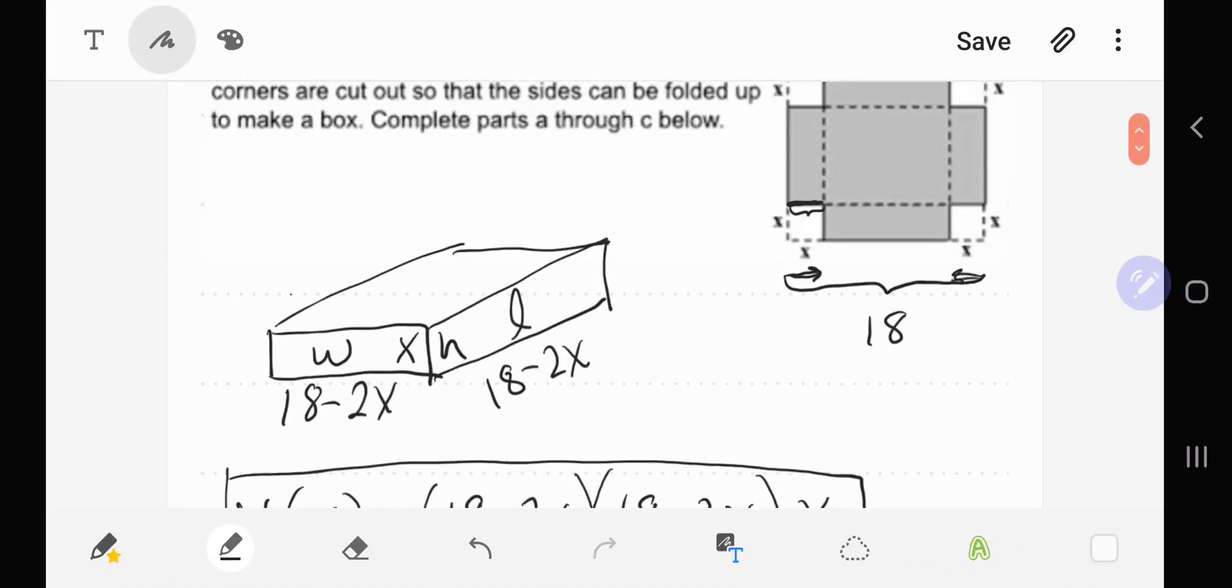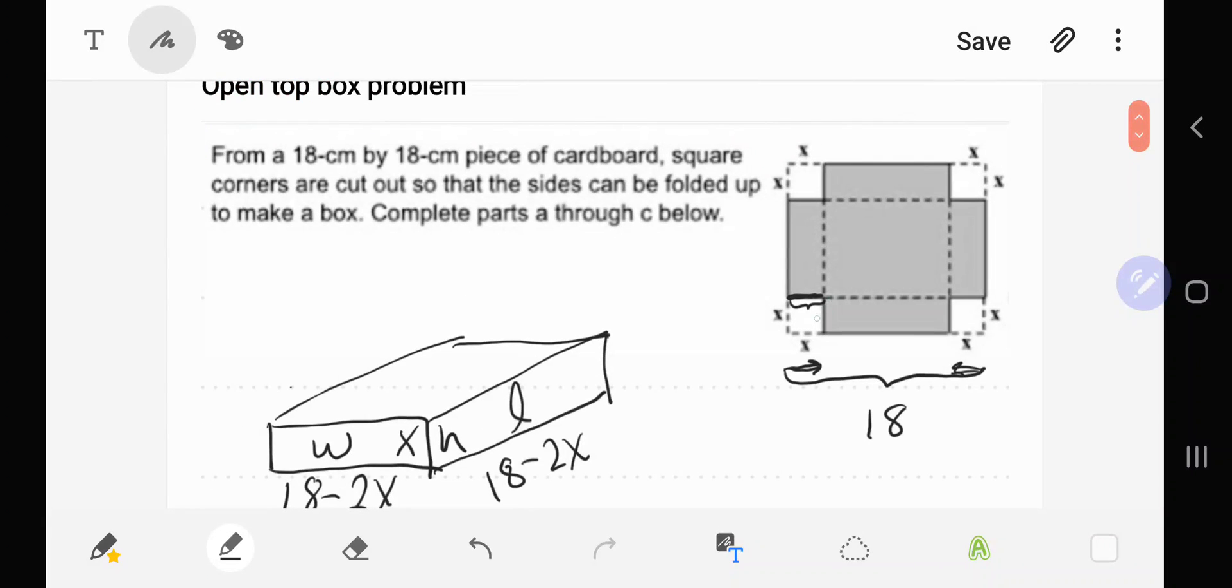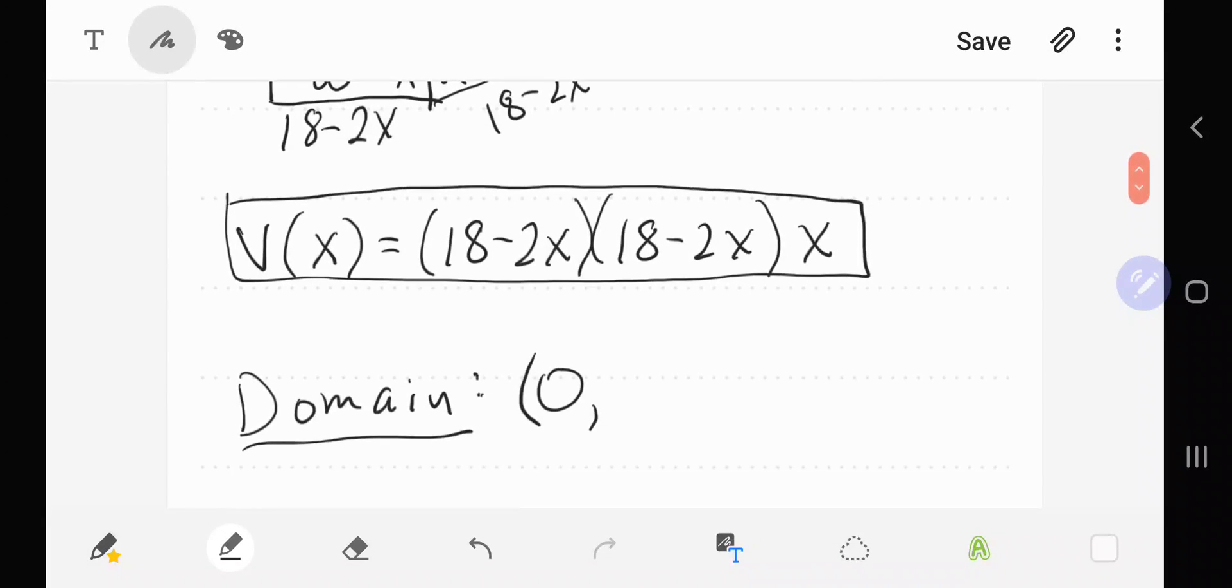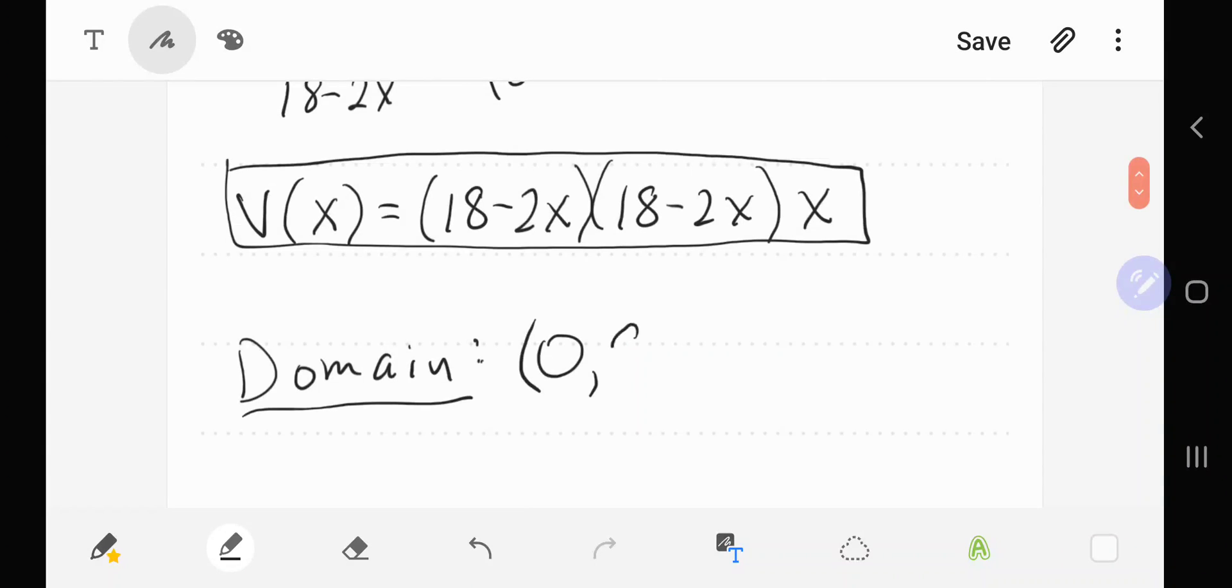Now let's consider what is the most I can cut. If I cut into this side here, the most I could cut is halfway in, because I do have to cut from both sides. The side length is 18, so the most I could cut is 9.